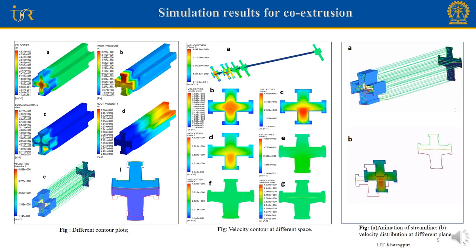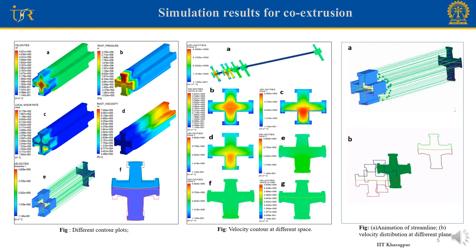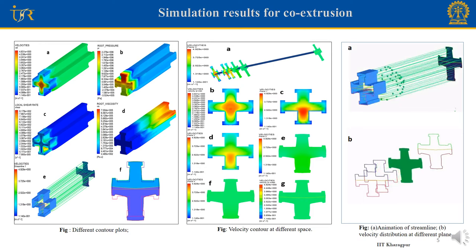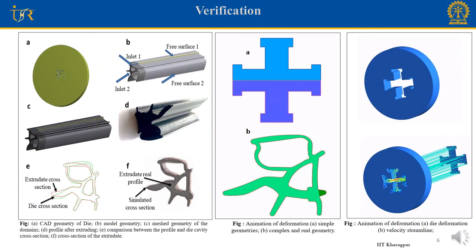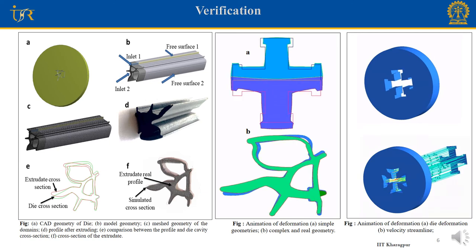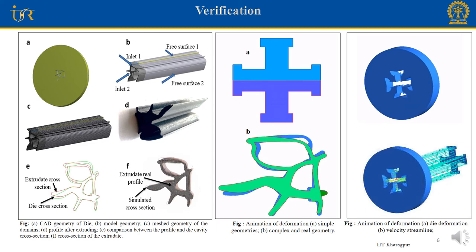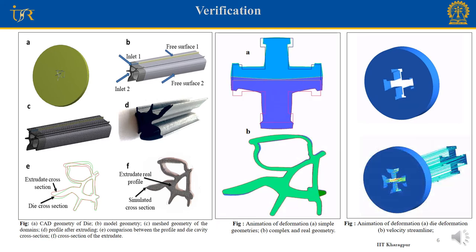These are the results obtained from the simulation: velocity, pressure, shear rate, viscosity contours, streamlines, velocity, and extrudate deformation. We have also detected the change in velocity profile from Poiseuille to plug flow. We compared our simulated results with a complex-shape automotive profile with the help of ALP Overseas Ltd., a rubber profile manufacturer, and found more than 98% efficacy.